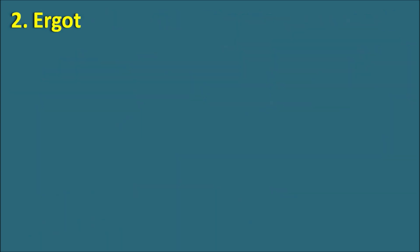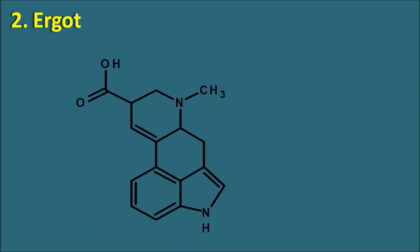The second group is ergot alkaloids, coming from Claviceps species like Claviceps purpurea. Ergot alkaloids are mainly derived from a chemical species having the indole nucleus — specifically d-lysergic acid. The ergot plant also has other alkaloids not derived from lysergic acid, called clavine-type alkaloids, but therapeutically the lysergic acid-derived alkaloids are more important.